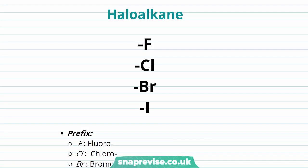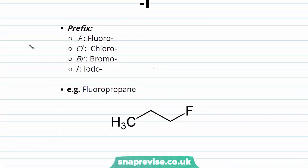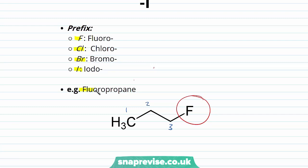Now if we have a look at our haloalkanes — depending on the halogen present, we represent this differently using the elemental symbol. For fluorine we use F, chlorine Cl, bromine Br, and iodine I. The haloalkanes are usually represented in the prefix: fluorine is 'fluoro', chlorine is 'chloro', bromine is 'bromo', and iodine is 'iodo'. Looking at an example compound with three carbons and a fluorine bonded on the end, with no double carbon-to-carbon bonds, the stem is 'prop' and as it's an alkane the suffix is '-ane', giving the name fluoropropane.